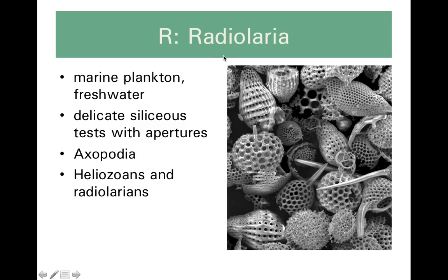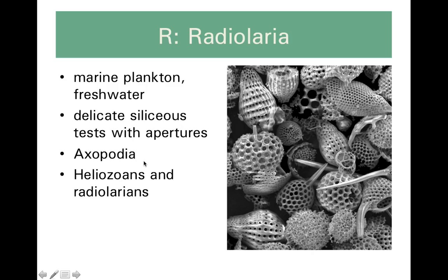Rhizarians also include the radiolaria. These are typically found floating around with ocean currents as plankton, though some are found in freshwater habitats. A fundamental difference between radiolarians and forams is the composition of their tests. Forams had a calcareous test; radiolarians have a silicious test — silicious meaning glass-like, or made from silica, silicon dioxide. Their tests are also pocked with little holes through which more needle-like axiopodia, or needle-like pseudopodia, can emerge.